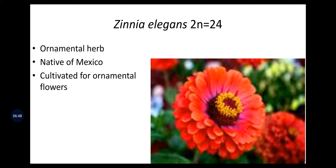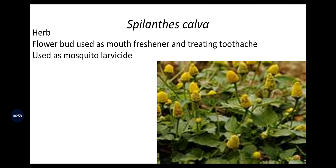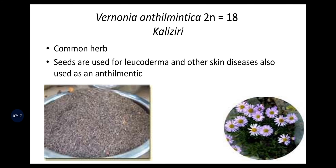Zinnia elegans, 2n = 24, is another ornamental herb native to Mexico, cultivated for ornamental flowers. The keeping quality of Zinnia is also high compared to other family members. Spilanthes calva is also a herb; the flower bud is used as a mouth freshener and treats toothache. It is also used as a mosquito larvicide. Vernonia anthelmintica, 2n = 18, commonly called kalajaji, is a common herb; seeds are used for leucoderma and other skin diseases, and also used as an anthelmintic.